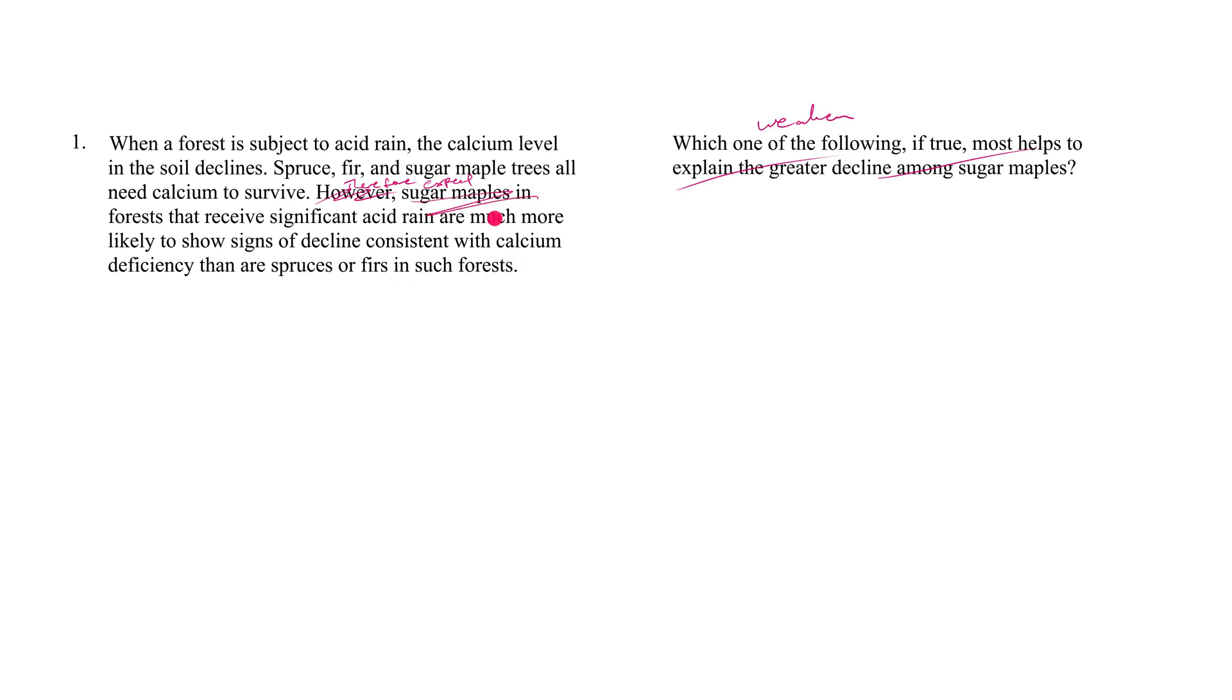We can simplify this by just saying, therefore we expect what? Therefore we expect sugar maples, spruces, and firs in forests which receive significant acid rain to roughly equally show or not show signs of decline consistent with calcium deficiency. That's it.